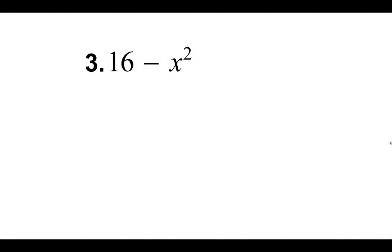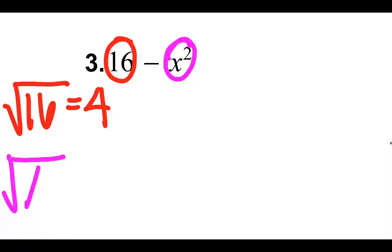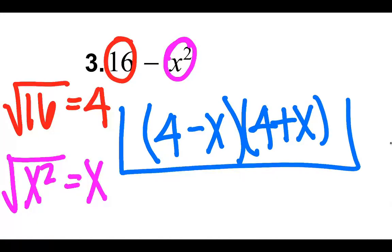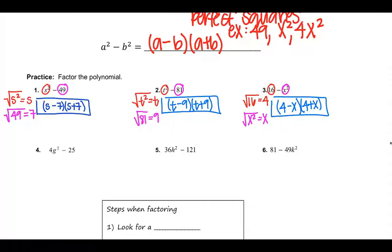Same thing here — I've got 16. It's just in reverse order. Square root of 16 is 4 — 4 times 4 gives me 16. Then I do the same thing over here with x squared. If I take the square root of x squared, I know x times x gives me x squared. So then I do 4 minus x times 4 plus x, which gives me that polynomial up there. Those aren't bad — those are pretty easy.